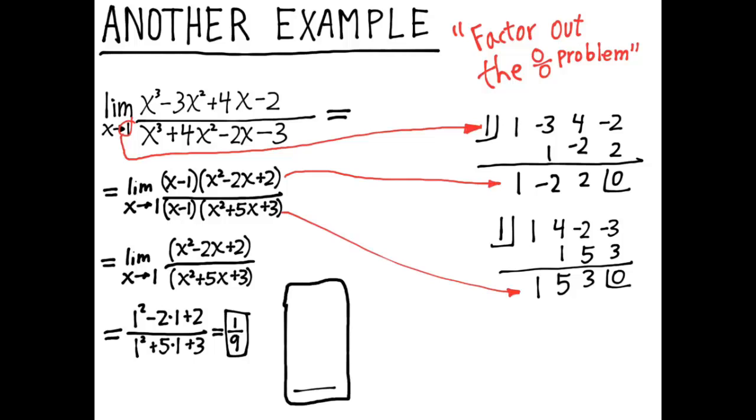If you look at a graph of y equals this rational function, and say you look at it between 0 and 2 on the x axis, and between 0 and 0.2 on the y axis, you'll see a little hole right over there.